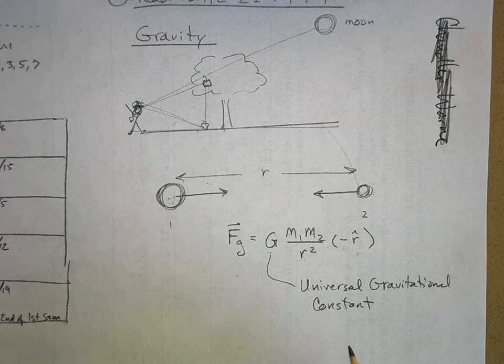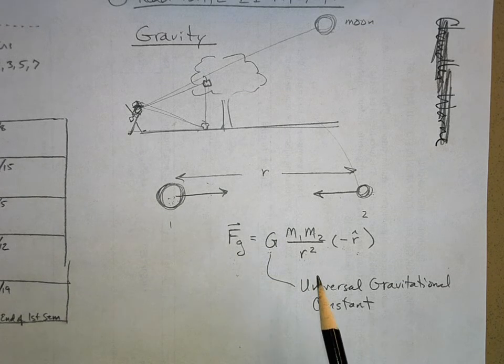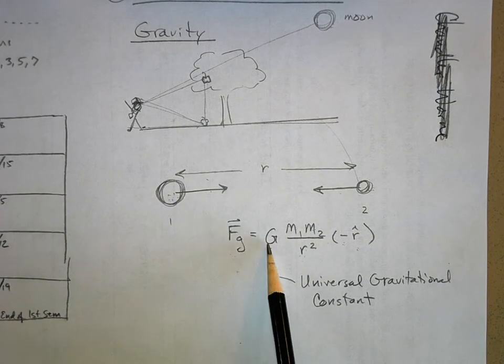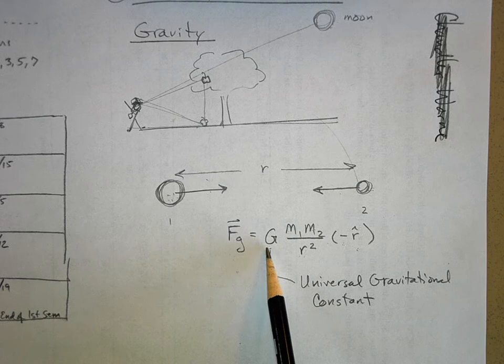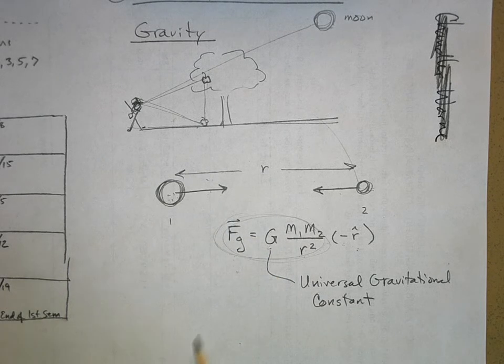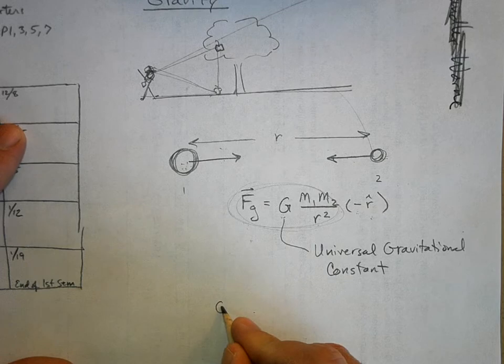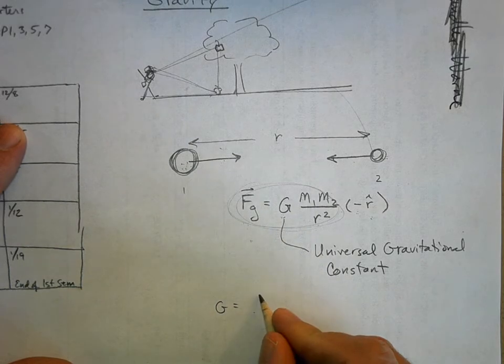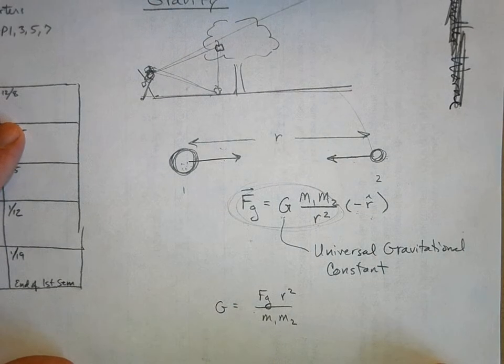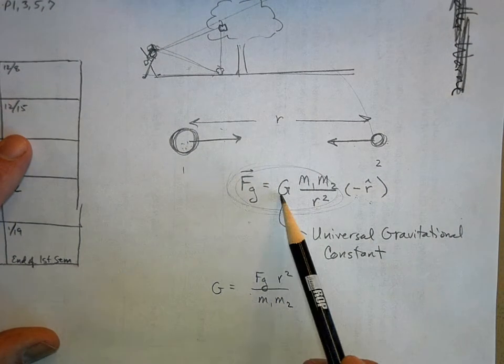Many decades after Newton, a man named Cavendish in England did an experiment where he figured out what G was. Now if you take this equation and you solve for G, you get this: G is equal to the measured force of gravity times r squared divided by the masses. Okay, that's all I did was take this equation and solve it for G. Simple.